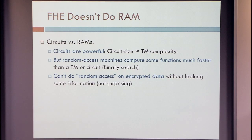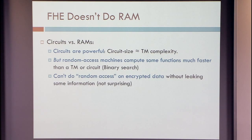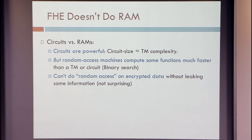Another thing that homomorphic encryption doesn't do is random access. In terms of being able to compute something, circuits can compute anything that any other reasonable computation does, but the complexity is not always the same. It's more or less the same as the complexity of Turing machines, but not always the same as the complexity of random access machines. There is a quadratic or cubic blow-up in every computation. In some settings with pre-encrypted data — like a sorted array — with random access you can access something in logarithmically many steps, whereas with circuits it has to be linear. Homomorphic encryption can't do random access.